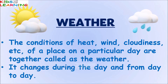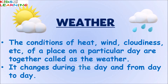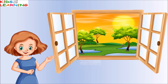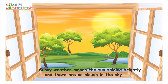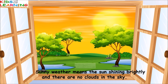Now let's see different types of weathers. Look outside the window. What's the weather outside? It's a sunny weather. Sunny weather means the sun is shining brightly and there are no clouds in the sky.